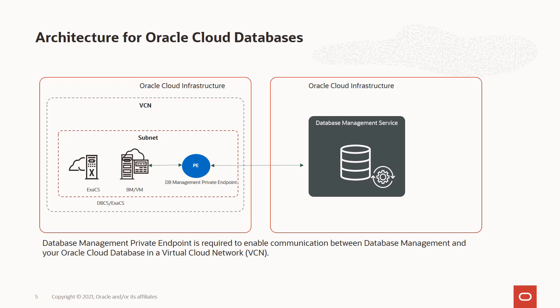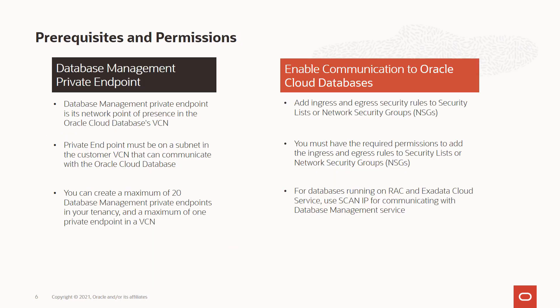A database management private endpoint is required to enable communication between database management and your cloud database in a virtual cloud network. The first prerequisite is to have the database management private endpoint, which is its network point of presence in the Oracle Cloud Databases VCN as part of the customer tenancy. The private endpoint must be on a subnet in the customer VCN that can communicate with the Oracle database. You can create a maximum of 20 database management private endpoints in your tenancy and a maximum of one private endpoint in a VCN.